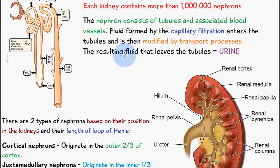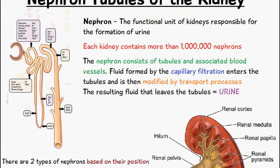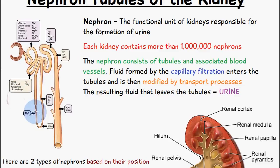The fluid formed by capillary filtration enters the tubules and is modified by transport processes — the resulting fluid is known as urine. To briefly explain the filtration process: blood passes via the afferent arteriole through the Bowman's capsule, then into the proximal convoluted tubule where transport processes occur, then into the loop of Henle, and finally into the distal convoluted tubule before passing into the collecting duct.